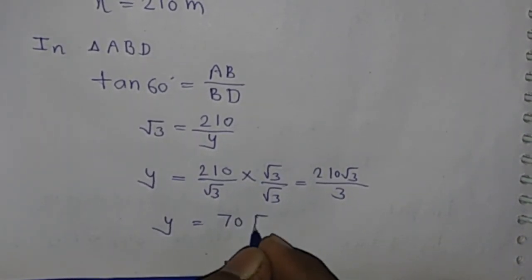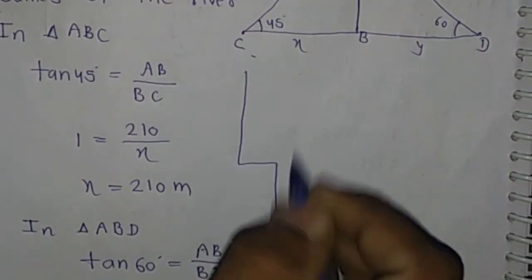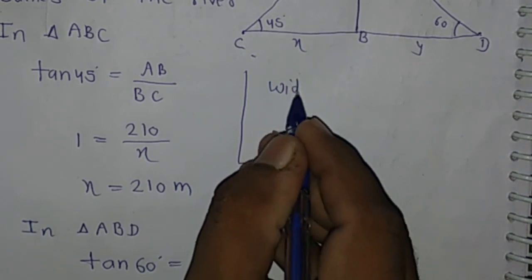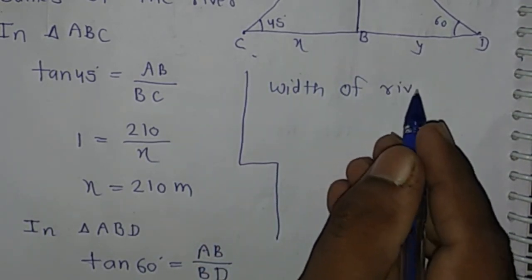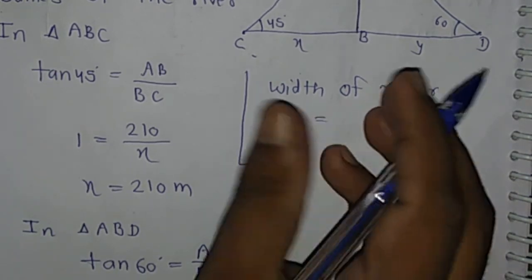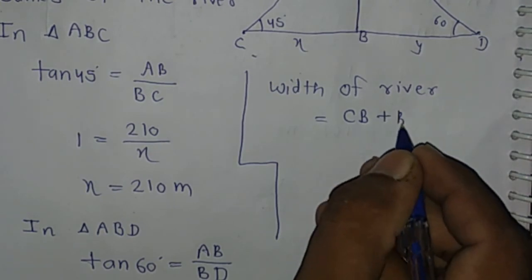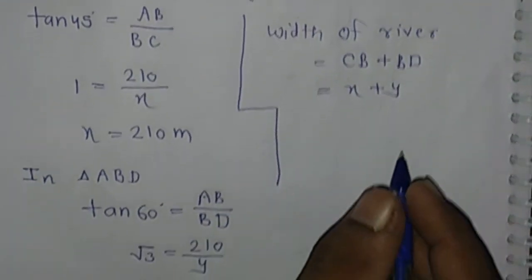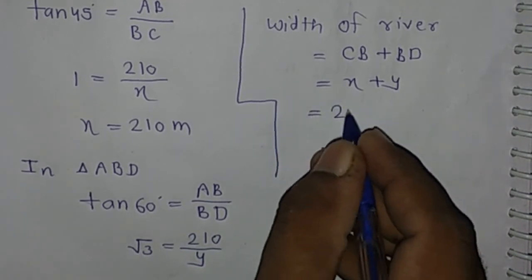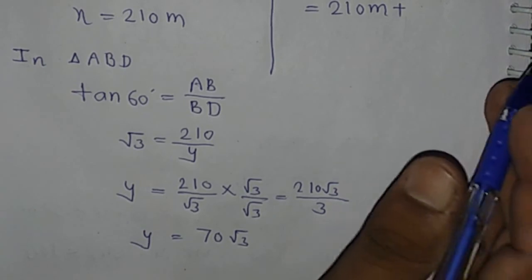Now, the width of the river is the sum of CB and BD, that is x + y. The value of x is 210 meters and the value of y is 70√3 meters.